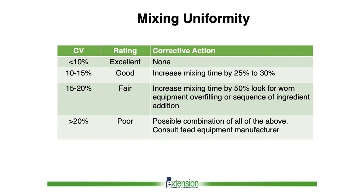The next step is to interpret the results of the mixer uniformity tests and take corrective action if necessary. A percent CV of less than 10 percent is excellent and no corrective action is needed. From 10 to 15 percent it is good, and to improve it, mixing time should be increased by 25 to 30 percent. From 15 to 20 percent CV it is fair, and can be corrected by increasing mixing time by 50 percent, looking for worn equipment, overfilling, or sequence of ingredient addition. If it is greater than 20 percent, it is poor — a possible combination of all of the above — and you should consult extension personnel or feed equipment manufacturers. Remember, if your mixer uniformity was poor or fair, you need to conduct the mixer uniformity assay again after the corrective action to ensure your mixer uniformity is good.